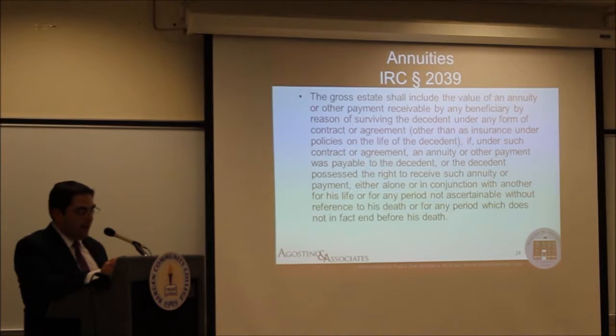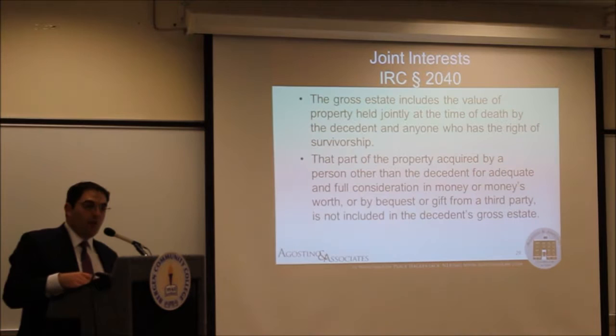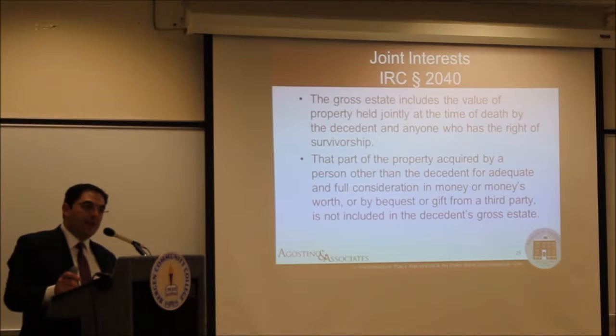Annuities are yet another area that Congress contemplated a decedent might own, and under Section 2039, the value of those annuities will be includable in the decedent's gross estate. Section 2040 of the Internal Revenue Code deals with joint interests. The decedent's gross estate will include the value of property held jointly at the time of death by the decedent and anyone who has the right of survivorship.